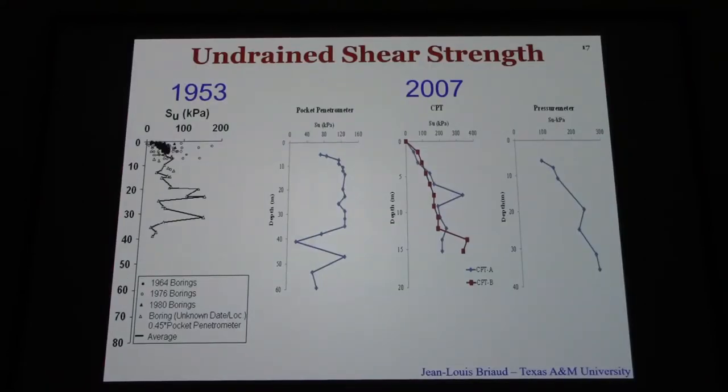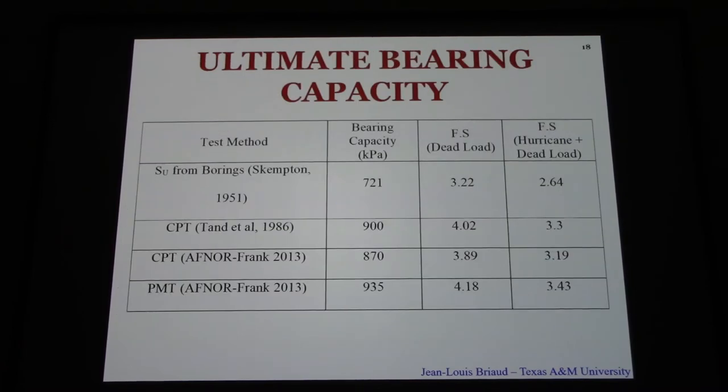You see some of the other results: the cone penetrometer tip resistance. Did some pressuremeter tests as well. Here is the pressuremeter ready to go into the open hole, and here is a typical curve that we get from the pressuremeter. Here is the linear part where you get the modulus from, and then the limit pressure. Here is the undrained shear strength from various types of measurement, 1953 and 2007, from pocket penetrometer, cone penetrometer, and pressuremeter. Order of magnitude 100 kPa or so for the undrained shear strength.